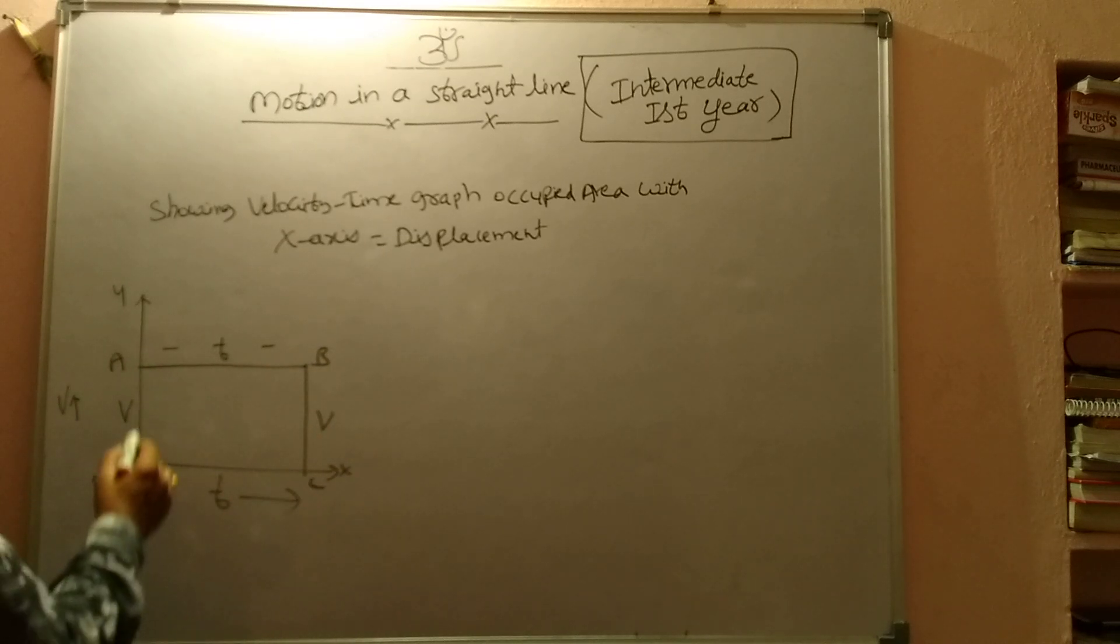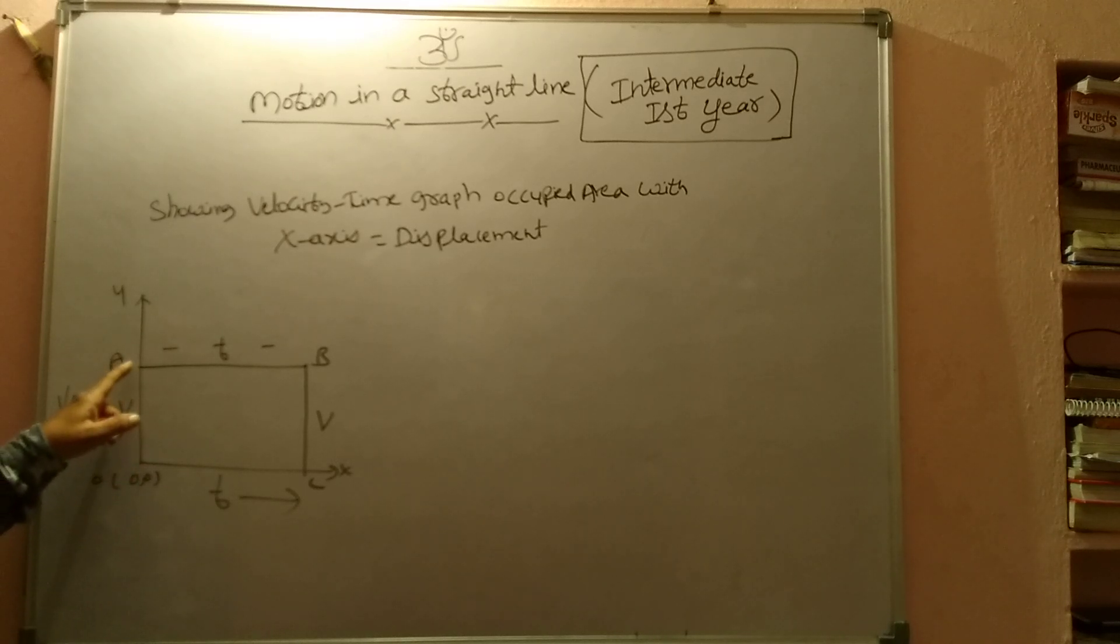What is the duration T? So here AV is the velocity time curve. Initially some velocity, after some duration same velocity, after some duration same. So that is called uniform velocity.